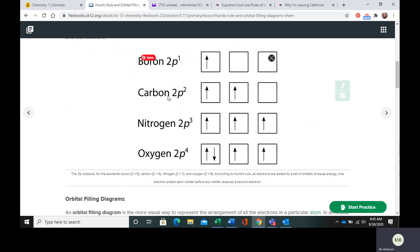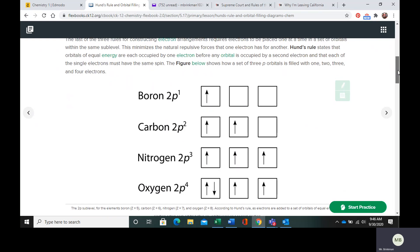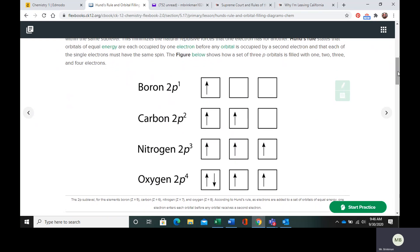Carbon has two electrons in the 2p orbital. Since the orbitals can only get filled one at a time, one at a time.